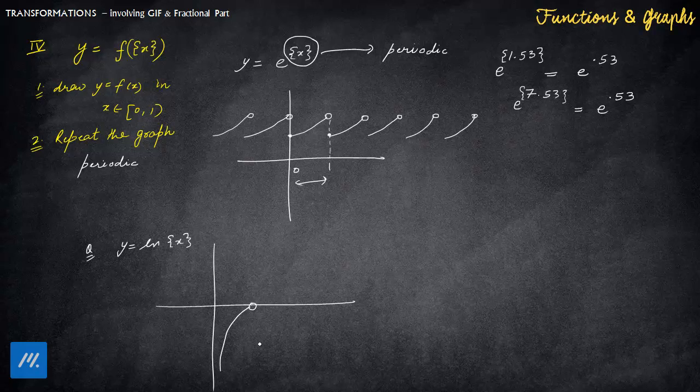X cannot take value 1 and that means you just have to repeat this graph from now onwards. It might not look periodic in my graph because I am drawing with a digi pen which makes it a bit difficult to draw, but this is actually the shape of y is equal to ln gif x. You just have to draw between 0 and 1.